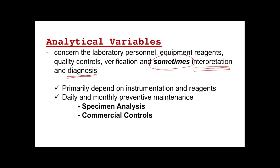Sometimes, just by looking at the specimen during analysis, we already have an idea of the possible result. For example, a chylous or milky specimen tells us the patient has a high cholesterol or triglyceride level. An icteric specimen could indicate a high bilirubin concentration. These analytical variables primarily depend on instrumentation, reagents, daily and monthly preventive maintenance, specimen analysis, and the commercial controls being used.